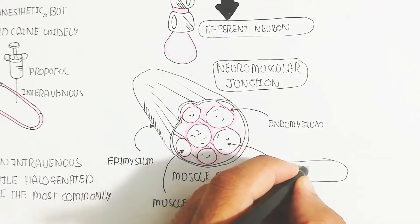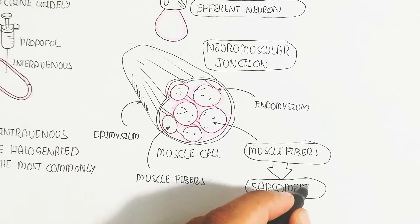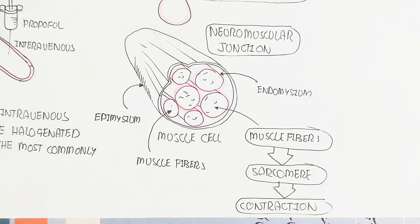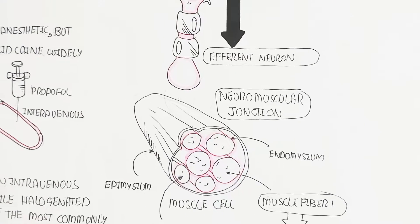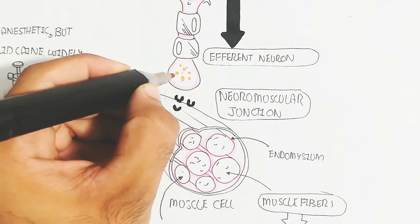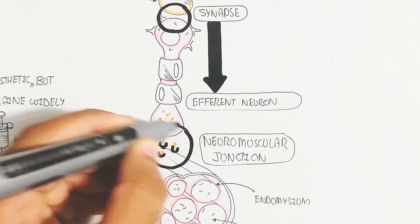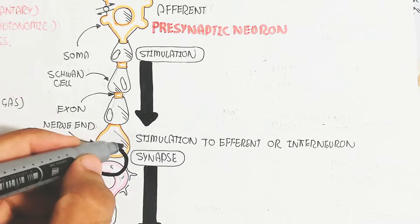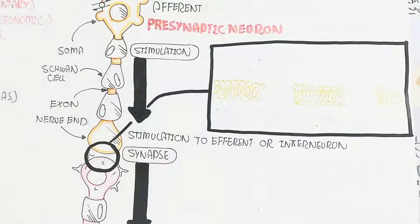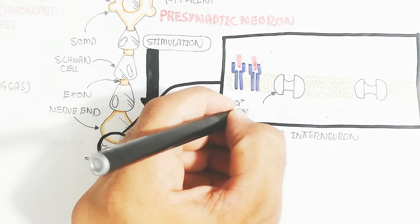The muscle fiber is composed of sarcomeres, which are the contractile units of the muscle — contraction occurs in the sarcomere. After binding at the neuromuscular junction, acetylcholine causes sodium to move inside the cell, leading to depolarization of the muscle fiber, which triggers calcium influx. The calcium binds with troponin, and after this binding, contraction occurs.